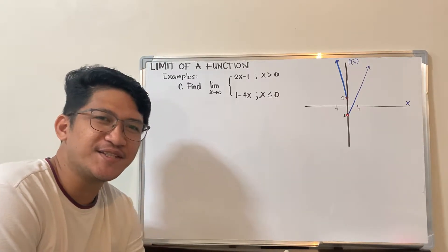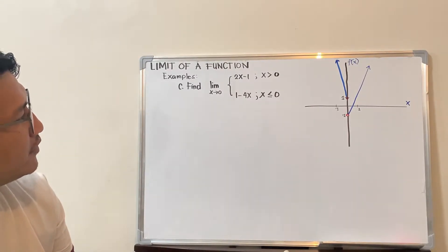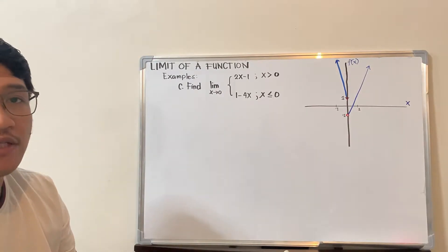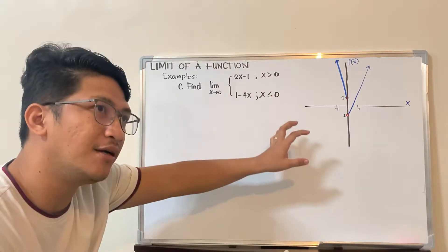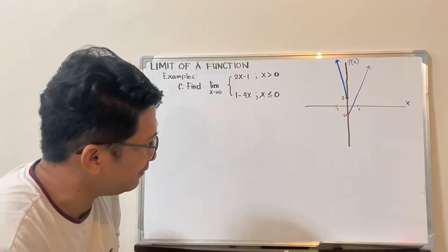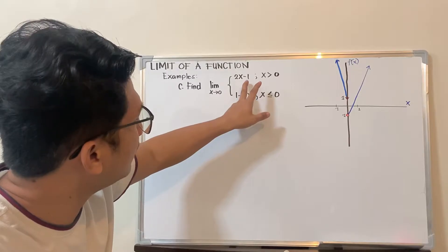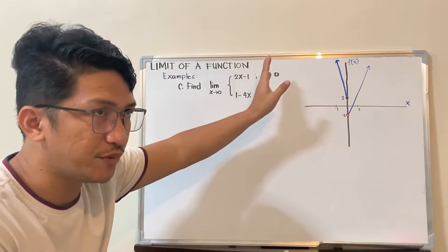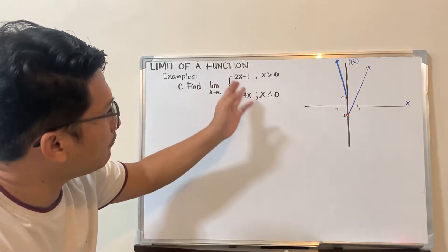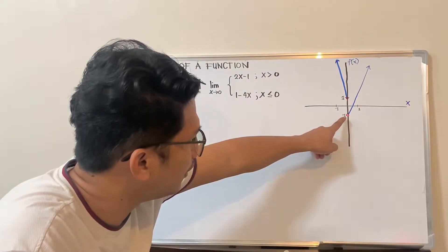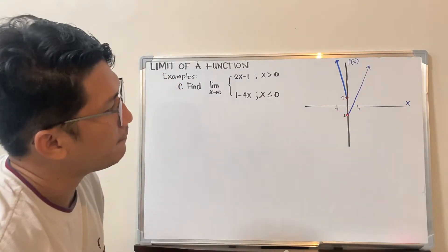Hello everyone, welcome to my channel, this is Sir Gavs again. In this part of the video we are talking about the limit of a function — examples — and we have a specific example here: a piecewise function. This is the graph of the piecewise function. This part is hollowed out because the condition is greater than 0, so 0 is not included. If you substitute 0, you get 2 times 0 minus 1 which is negative 1.